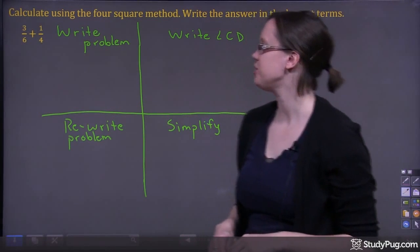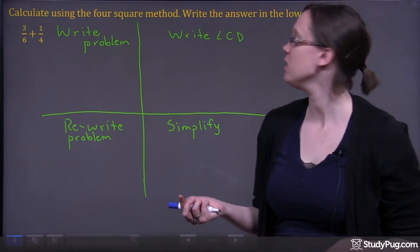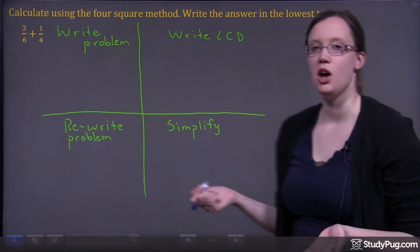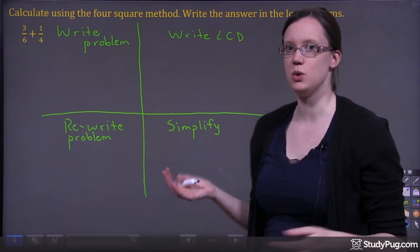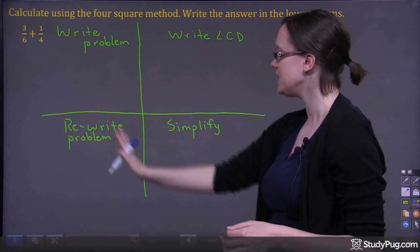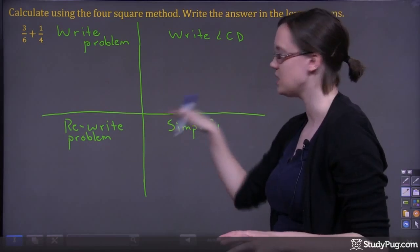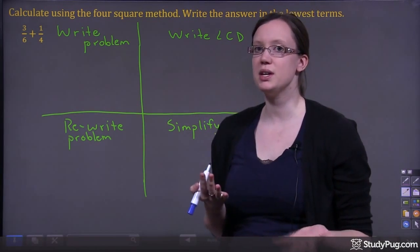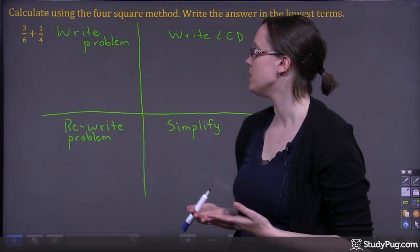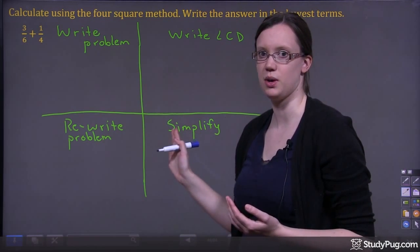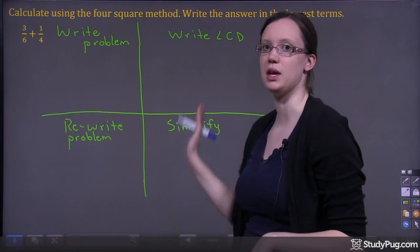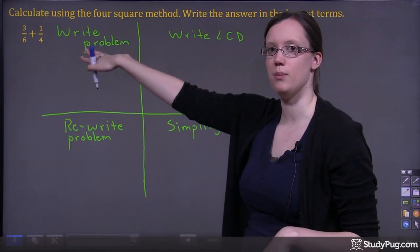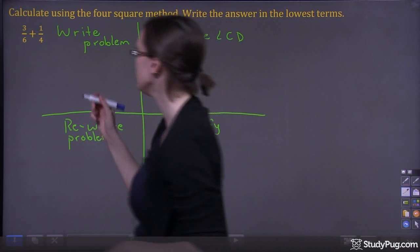Let's take a look at this question: calculate using the four-square method, and write the answer in lowest terms. So the four-square method — you can see I've taken our board here and divided it into four sections. We can break down this problem into four different stages using this template.